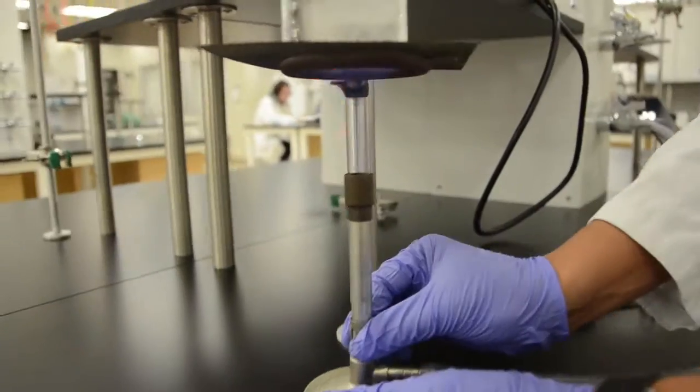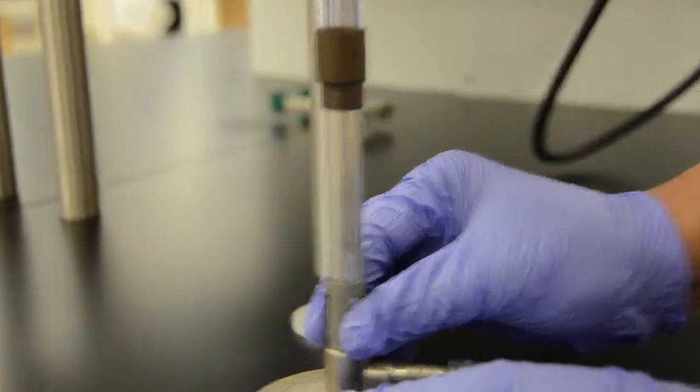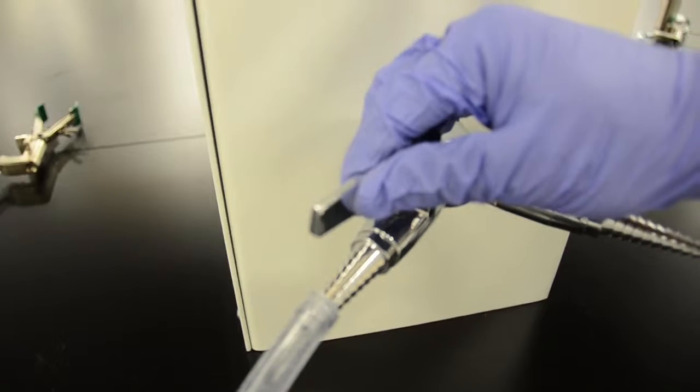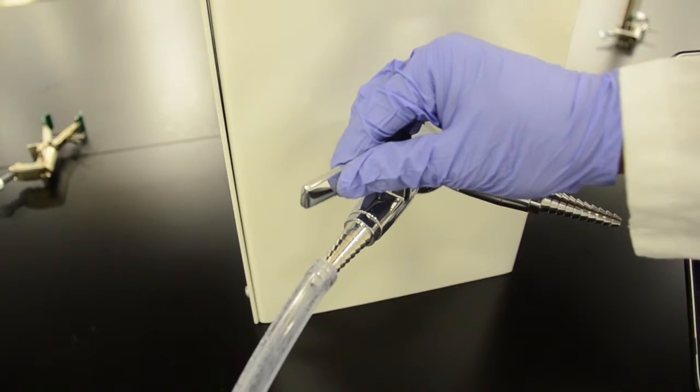After the flame is lit, you can adjust the opening on the Bunsen burner in order to adjust the height of the flame. Or, you can simply decrease the amount of gas flowing by turning the gas valve slightly towards the closed position.